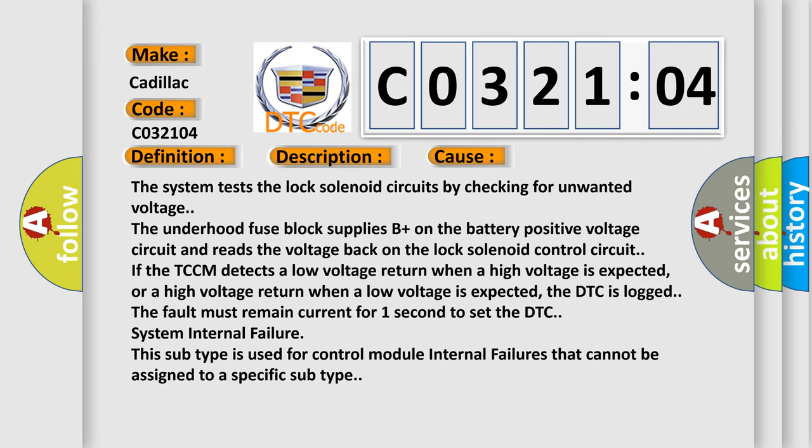The system tests the lock solenoid circuits by checking for unwanted voltage. The underhood fuse block supplies B plus on the battery positive voltage circuit and reads the voltage back on the lock solenoid control circuit.